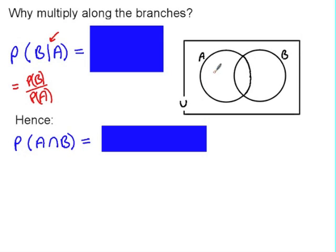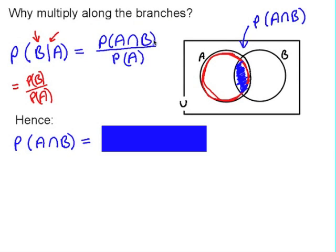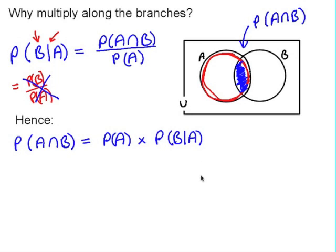Let's think about it using the Venn diagram. Given that event A has occurred, we ignore everything outside of the red circle. The probability that event B occurs given that event A has occurred is just the intersection section, which is the probability of A intersect B. So the correct way to work out P(B|A) is the probability of A intersect B over the probability of A.